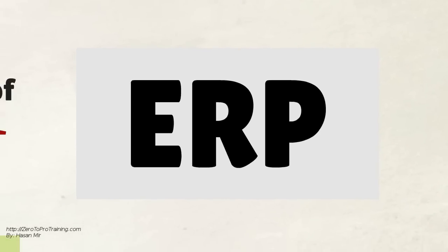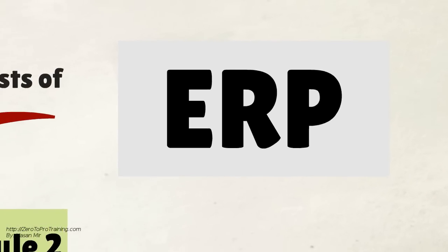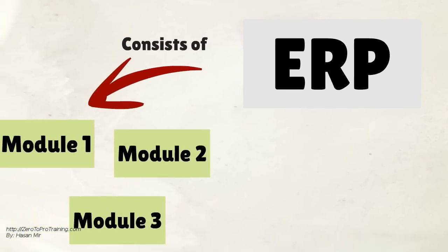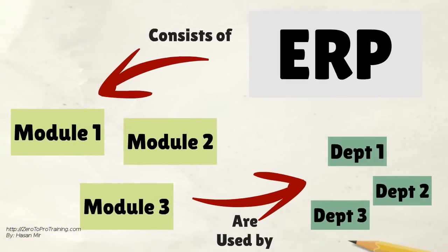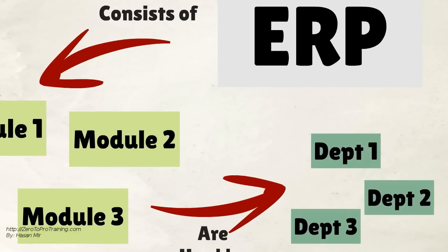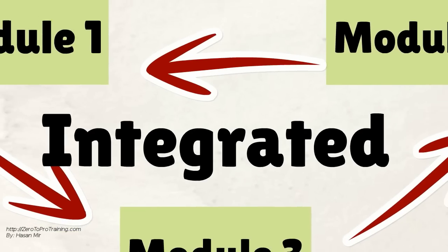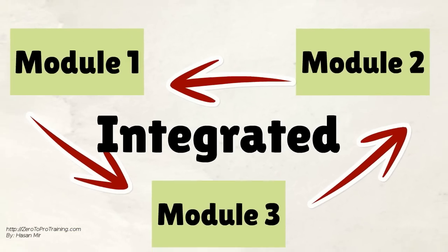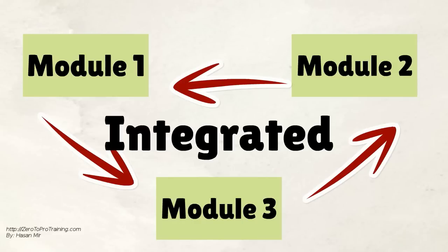A typical ERP software consists of modules. Modules are used by departments of the company to manage their day-to-day operations. Modules are integrated, meaning information is shared among them, and the data could flow from one module to the other.